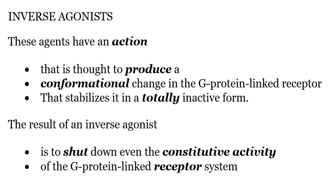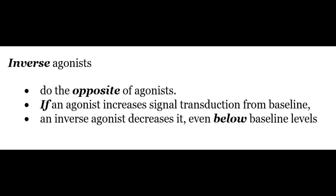Now coming on to inverse agonists. These agents produce a conformational change in the receptor that stabilizes it in a totally inactive form. The result of an inverse agonist is to shut down even the constitutive activity of the receptor system. Thus, inverse agonists do the opposite of agonists — if an agonist increases signal transduction from baseline, an inverse agonist decreases it even below the baseline.